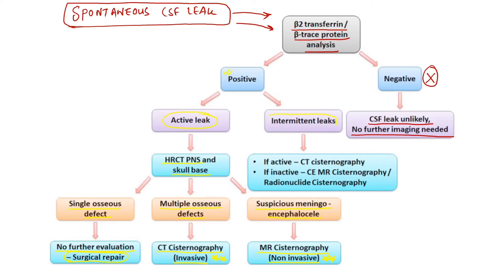For intermittent leaks — where the patient is not in an active state or is having intermittent attacks of CSF rhinorrhea — we should investigate the patient primarily. At the point of examination, if the patient is having an active spontaneous CSF leak, CT cisternography should be done. If not in active state, then gadolinium-enhanced MR cisternography or radionuclide cisternography may be done.